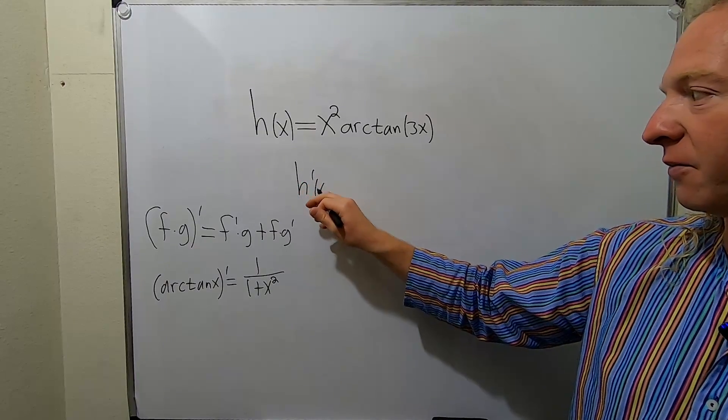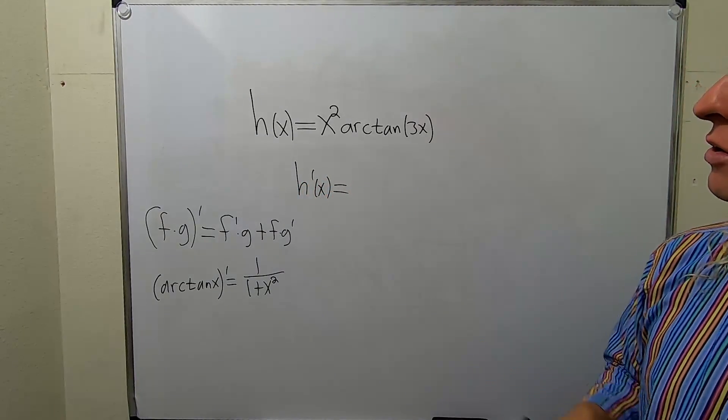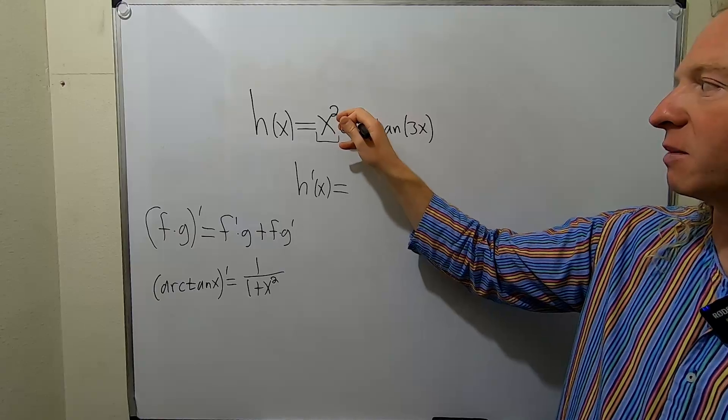So h prime of x is equal to—this is the first piece, x squared, and this is the second piece, arctangent of 3x.